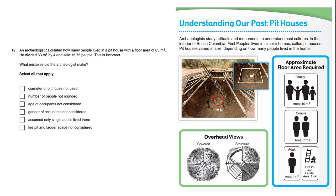An archaeologist calculated how many people lived in a pit house with a floor area of 63 meters squared. He divided this area by four and said 15.75 people. This is incorrect. What mistakes did this person make? Select all that apply.